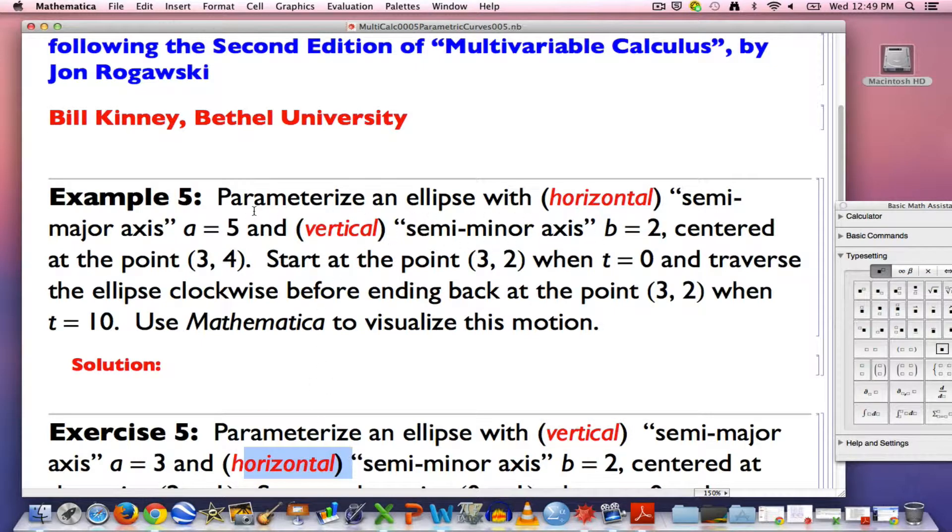Alright, so you might try to draw such an ellipse if you understood what I meant there. I'm going to draw it with Mathematica here in a second. I do want to show you that we're also parametrizing the ellipse in a certain way. We're starting at the three comma two, which is actually the lowest point on this ellipse, when t equals ten. And we're going to go back to where we start, not after two pi units of time, but after ten units of time.